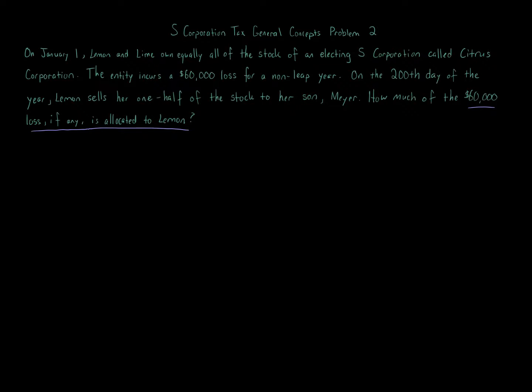We're told that Lemon basically sells one-half of her ownership in the stock. Further elaborating, we're told Lemon and Lime equally own all of the stock at the beginning of the year and Lemon sells her one-half of the stock. She's not selling one-half of her one-half, she's selling all of her one-half of the stock to Meyer. So basically at that point, Lemon no longer owns stock.